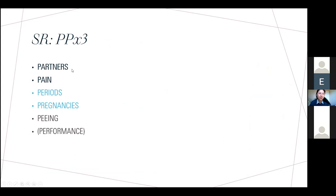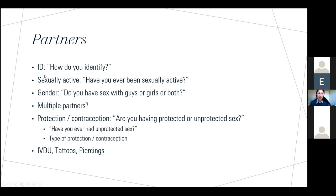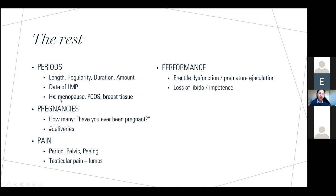For sexual health history: be nice, non-judgmental, and understanding. Start by asking how they identify, then explore: 'Have you ever been sexually active? Do you have sex with guys, girls, or both?' For unprotected sex, approach it like smoking: 'Are you having protected or unprotected sex? Have you ever had unprotected sex?' Also ask about the type of contraception they're on, and check compliance. The rest covers periods, pregnancy, pain, and performance if they raise it.